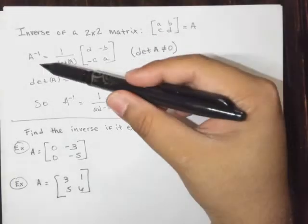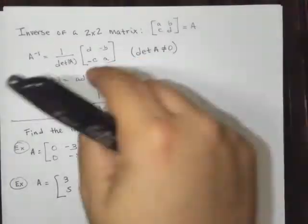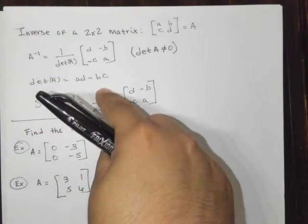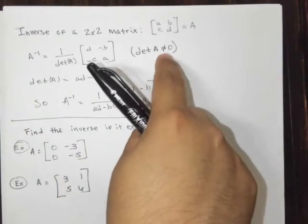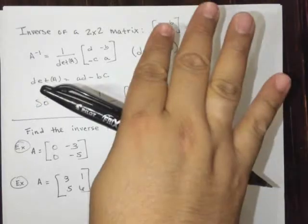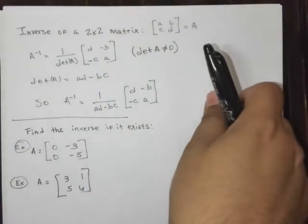So to find the inverse, you first have to find the determinant. If the determinant is zero, you stop and say it doesn't have an inverse. No inverse exists.